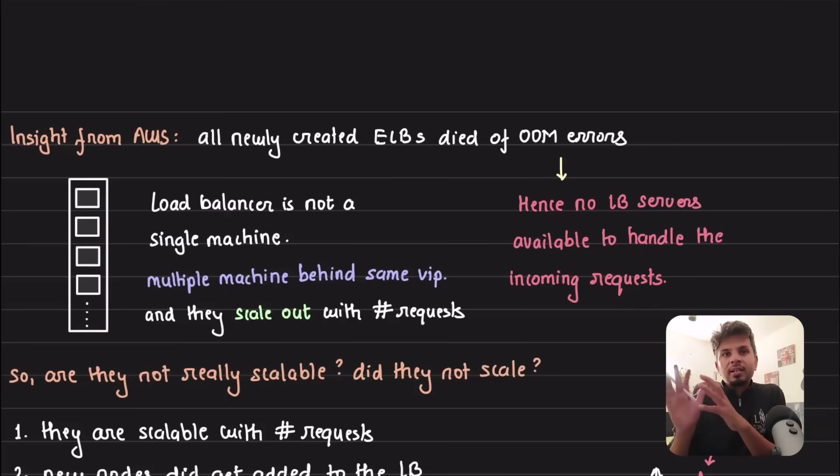What did AWS people tell them? AWS people from their internal dashboard got this insight that all the newly created ELBs, the servers within the load balancer - because load balancer is an abstract entity beneath the lines there would be multiple load balancer servers - the new load balancer servers that were created died because of OOM errors, out of memory errors.